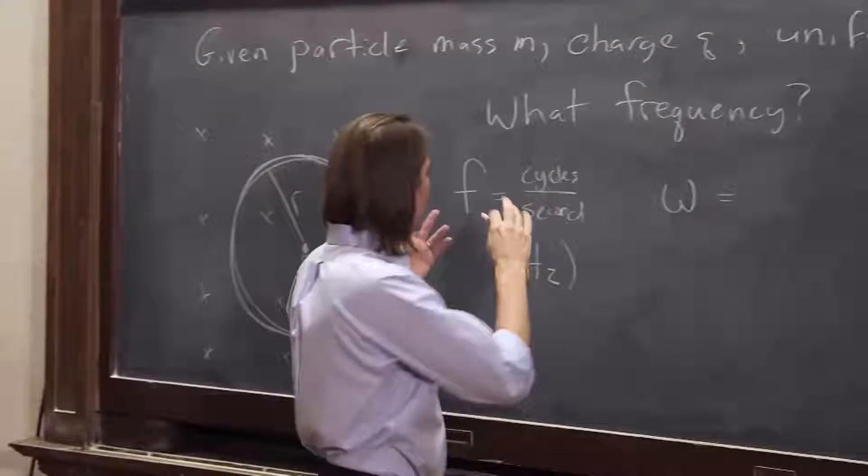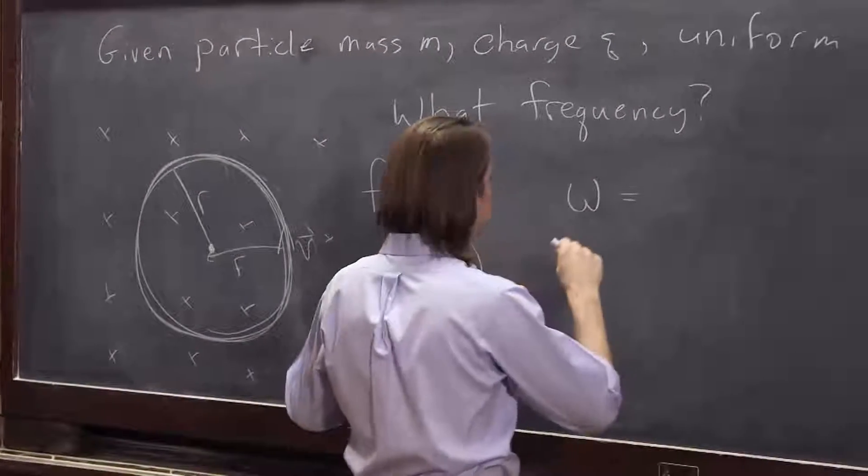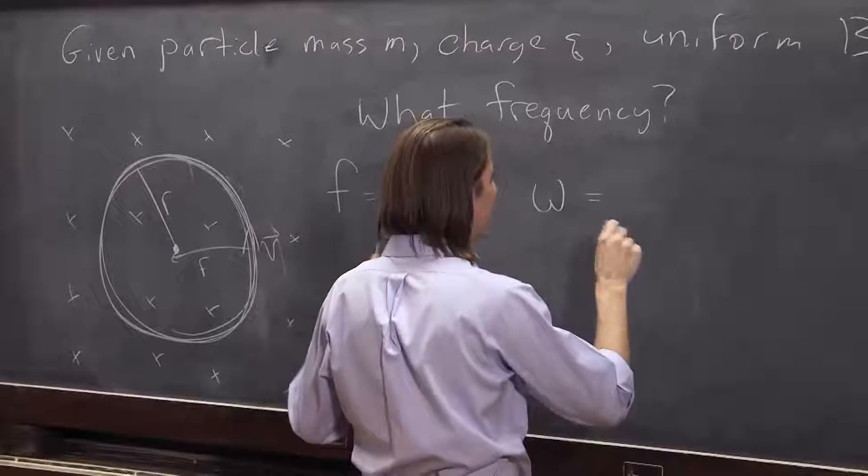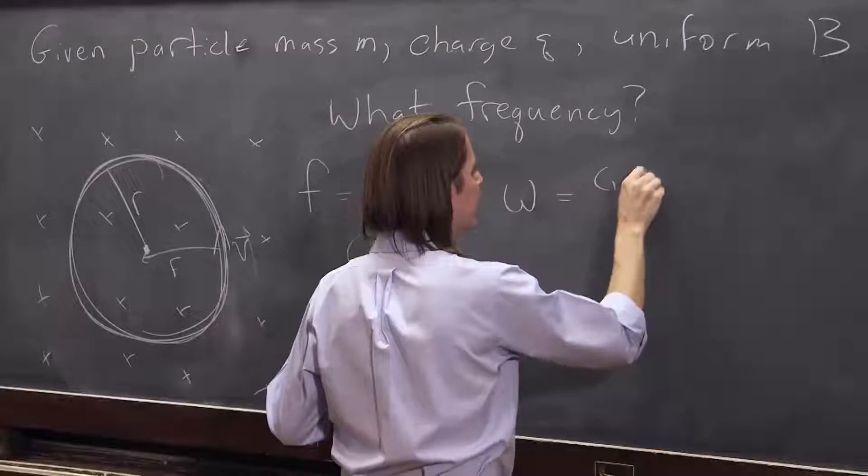Here's one way to remember it. Frequency f is cycles per second. Omega is circles per second.